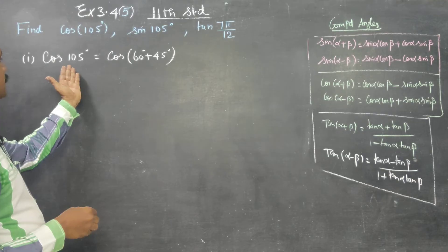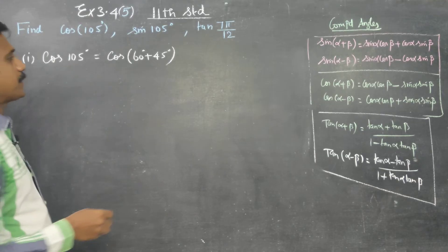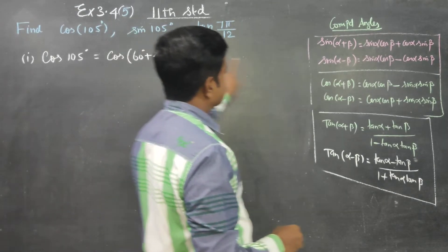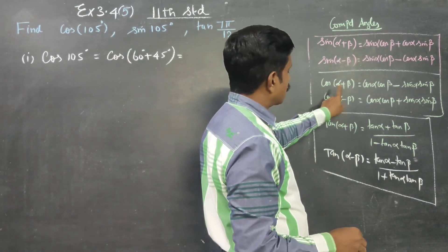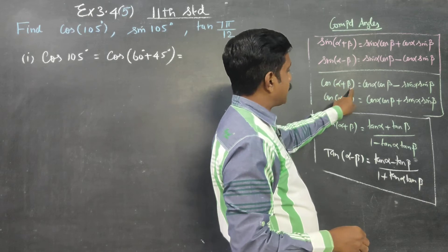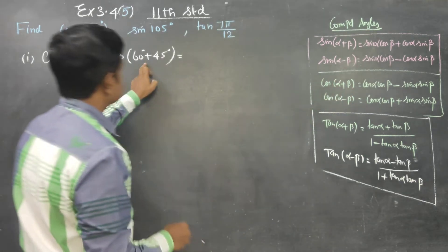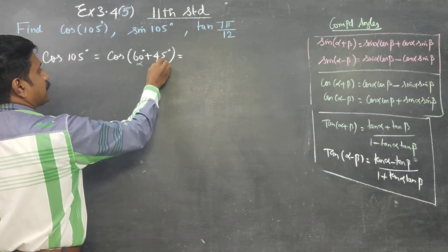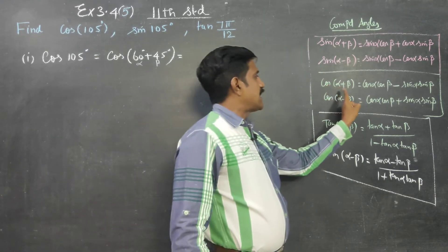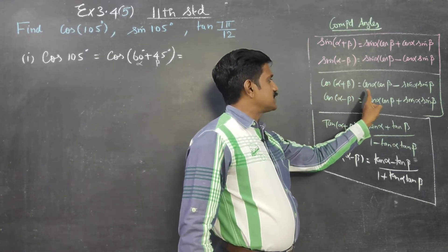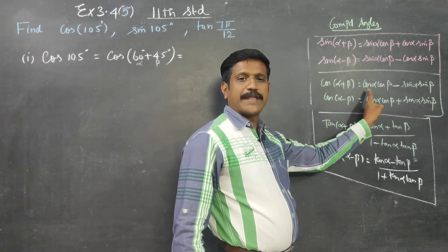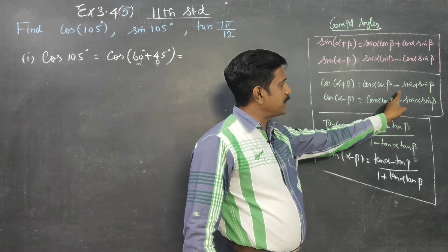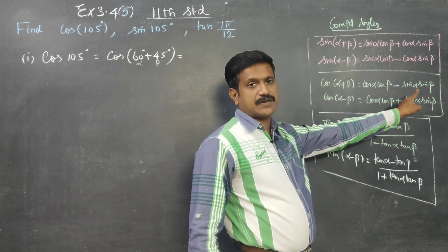60 plus 45 is 105. What is the formula for cos(x + y), or cos(α + β)? Here, 60° is my alpha and 45° is my beta. Using compound angle formula: cos(α + β) = cosα·cosβ − sinα·sinβ.